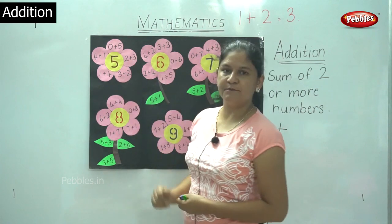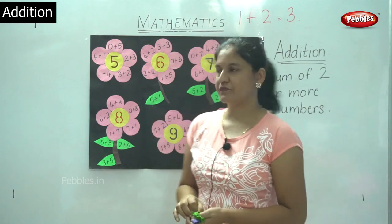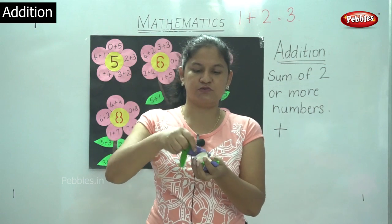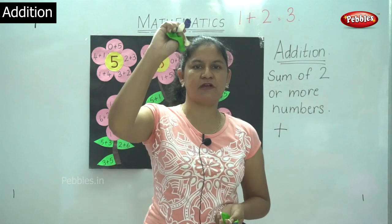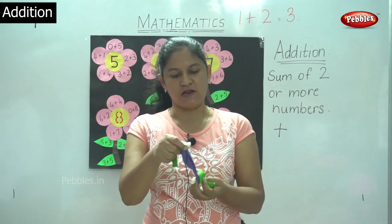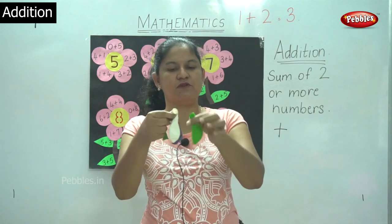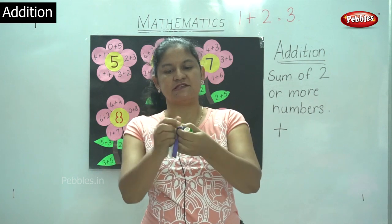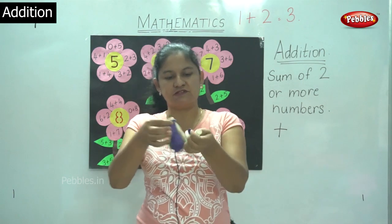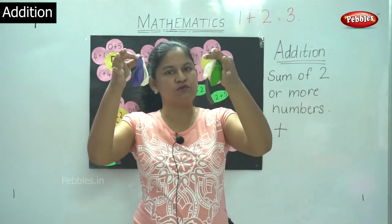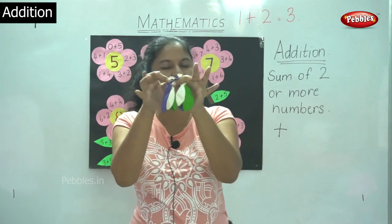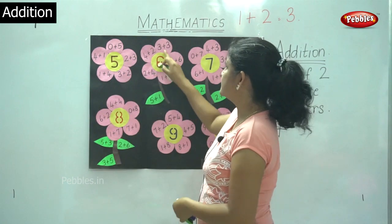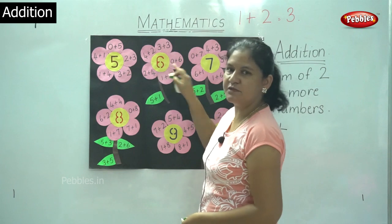Next we will move on to number 6. I have 3 balloons in my right hand and 3 balloons in my left. When I want to know the total number of balloons I have together in both hands, it totals up to 3 plus 3 that gives me 6. So 3 plus 3 gives me 6.